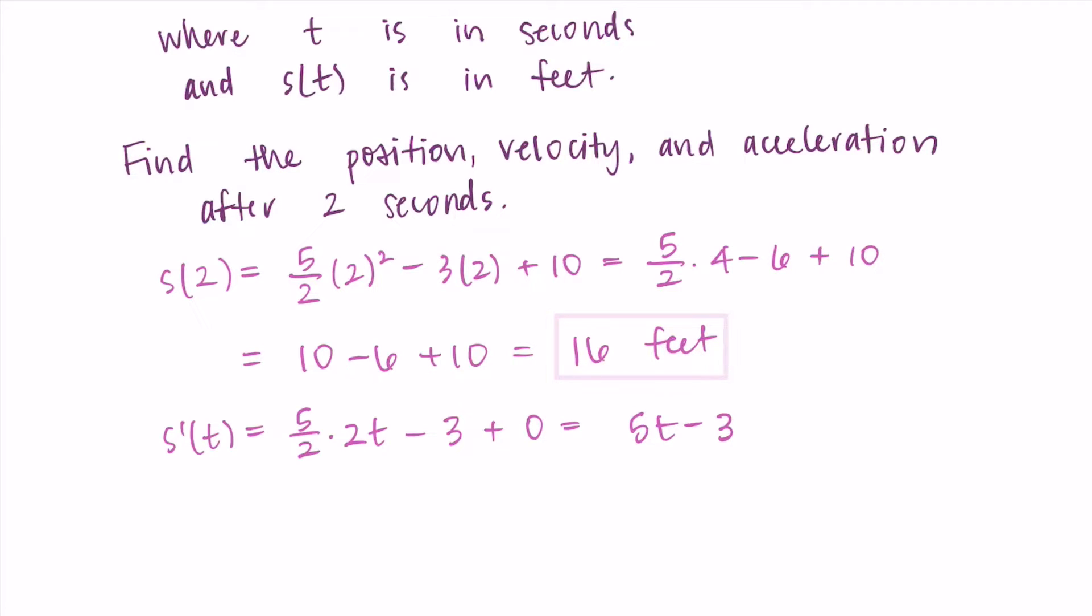We want to know the specific velocity at time is two, two seconds. So I plug two in, I get 5 times 2 minus 3. That's 10 minus 3, so I'm getting 7 as my velocity.